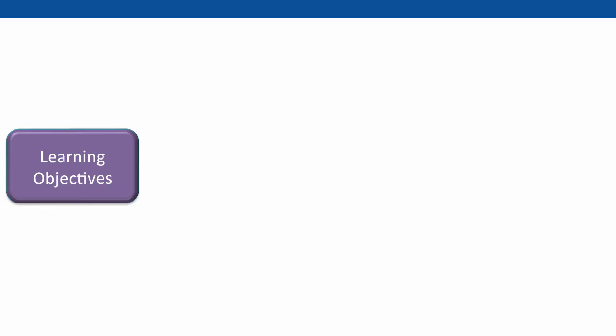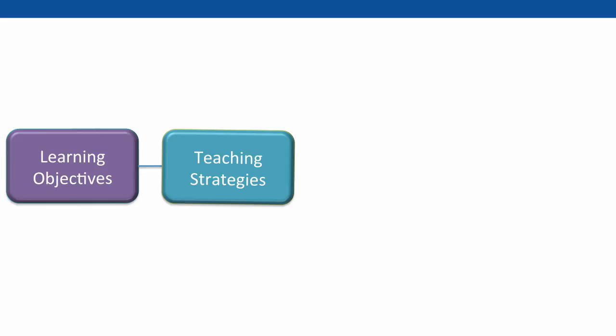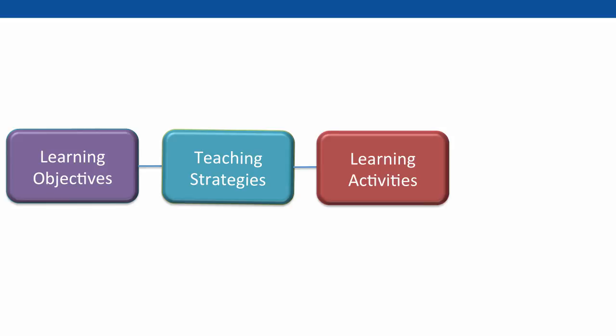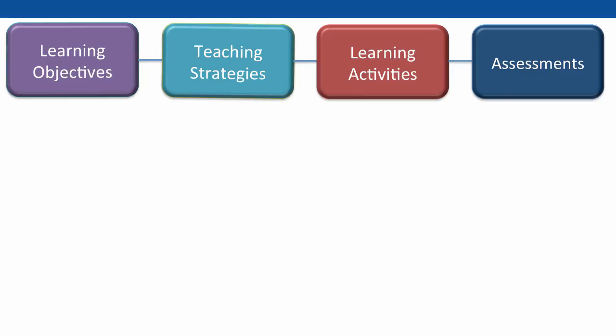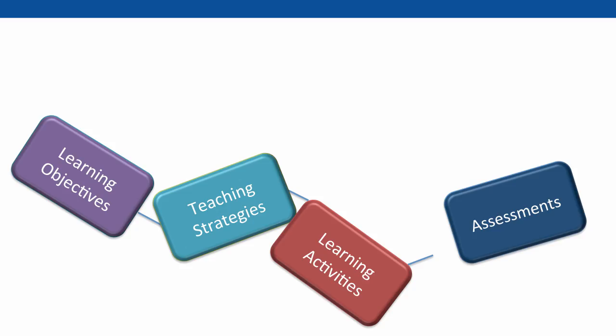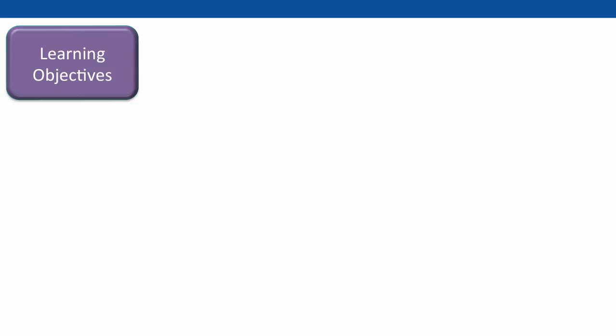Instruction is aligned when the learning objectives have corresponding teaching strategies, learning activities, and assessments. To know when instruction is aligned versus misaligned, we start with the stated learning objectives, which describe what students will be able to do once they complete the instruction.